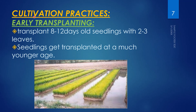The first cultivation practice of the SRI method is early transplanting. We have to transplant 8 to 12 days old seedlings. In the conventional method, seedlings are 25 to 30 days old with 2 to 3 leaves. In SRI, mainly younger seedlings are transplanted.